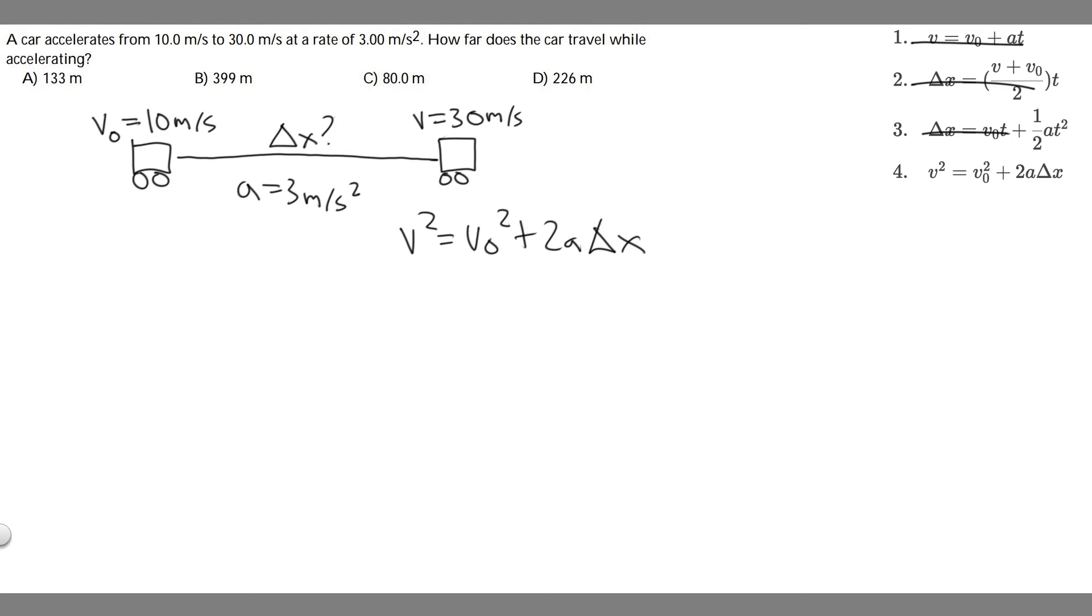So all we've got to do is plug in. We know v is 30, so 30 squared is equal to v sub 0. v sub 0 is the initial velocity, which we know it starts at 10, which is 10 squared, plus 2 times a. a is the acceleration, and we know it's 3 meters per second squared, and then delta x.